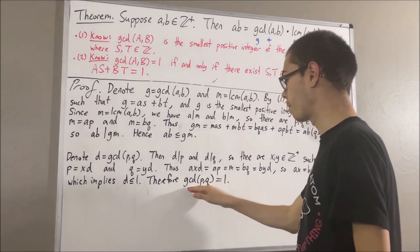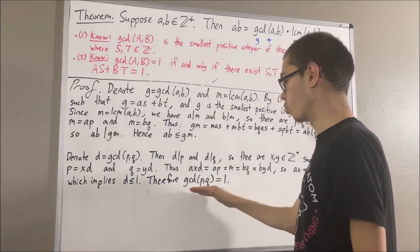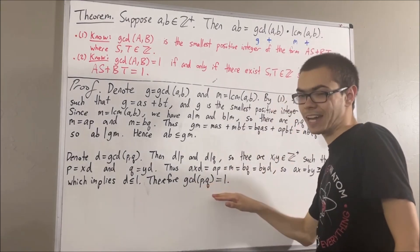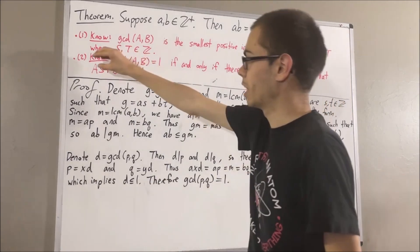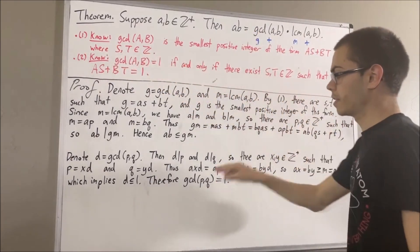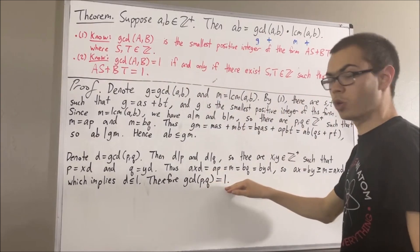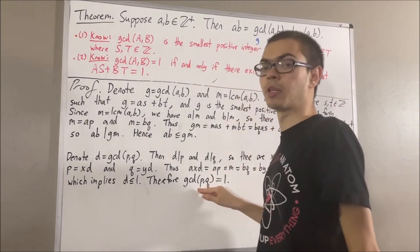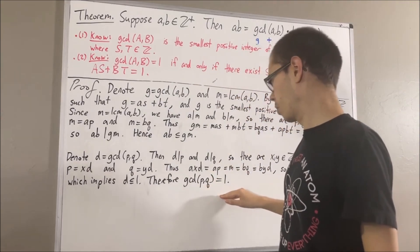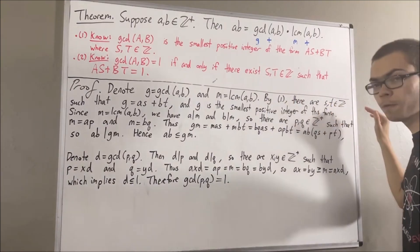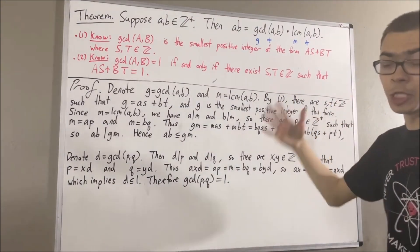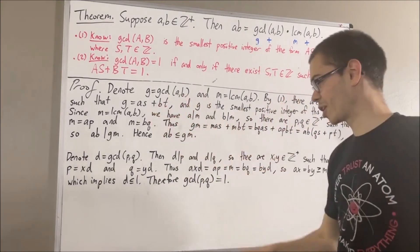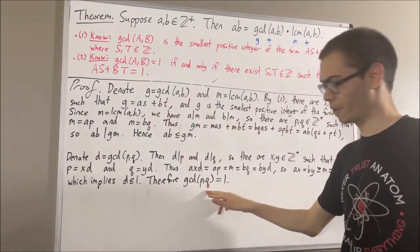So the greatest common divisor of P and Q is equal to 1, which is what we expected. Applying fact number 2, since the greatest common divisor of P and Q is equal to 1, there are integers U and V such that PU plus QV is equal to 1.